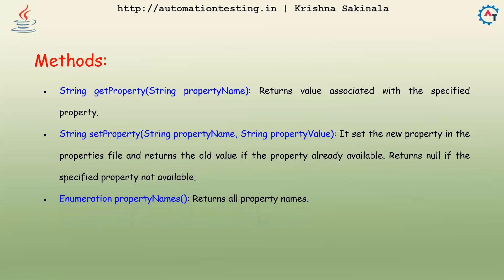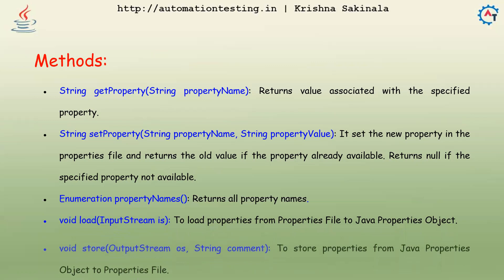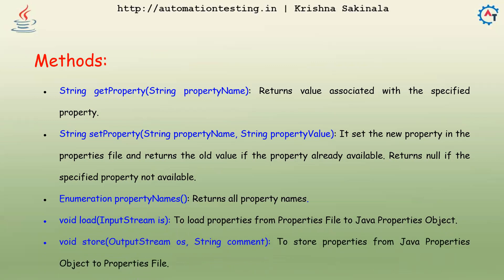The propertyNames() method returns all the property names, not values. The load(InputStream) method loads properties from a properties file into the Java Properties object — you use FileInputStream to read the file and pass that object to the load method. The store(OutputStream, comment) method is the reverse — it stores properties from the Java Properties object back to the properties file.